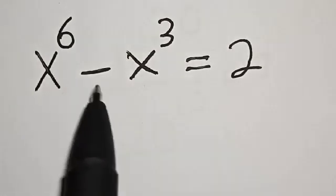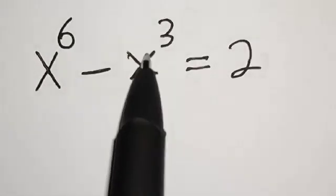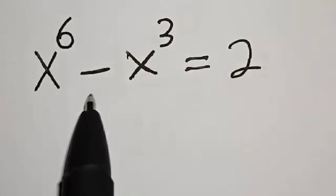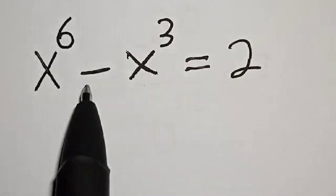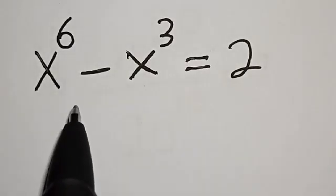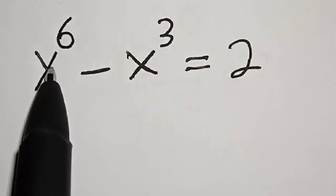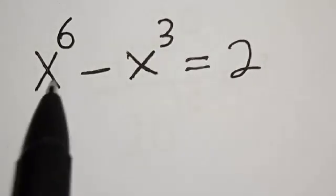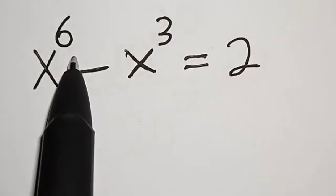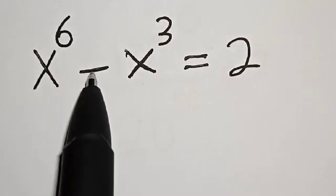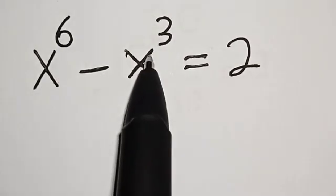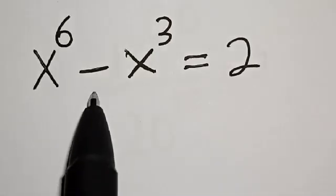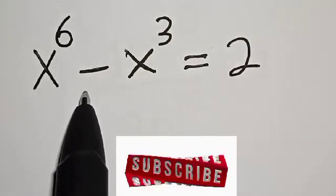s raised to power 6 minus s raised to power 3 is equal to 2. Hi everyone, welcome to my class. In this class we want to find the value of s from this given exponential equation: s raised to power 6 minus s raised to power 3 is equal to 2.